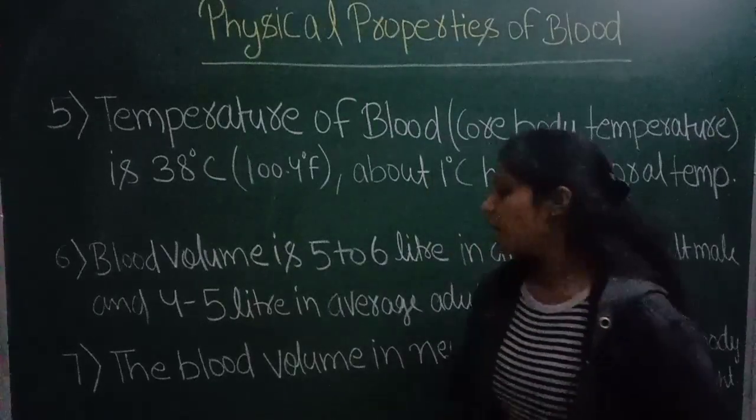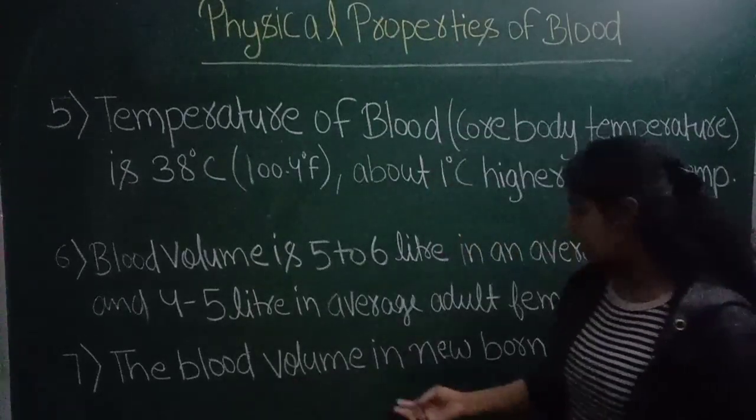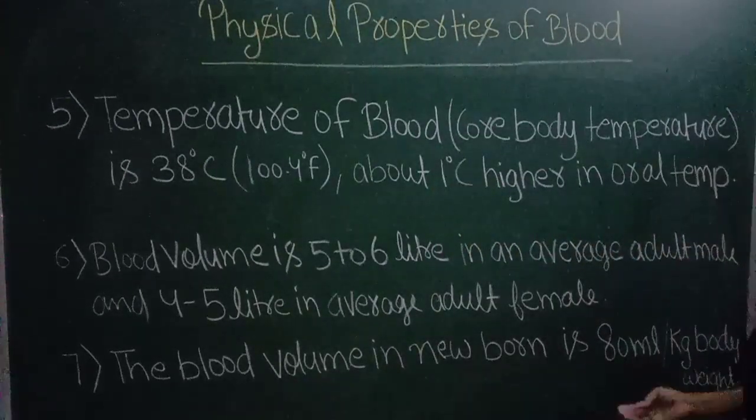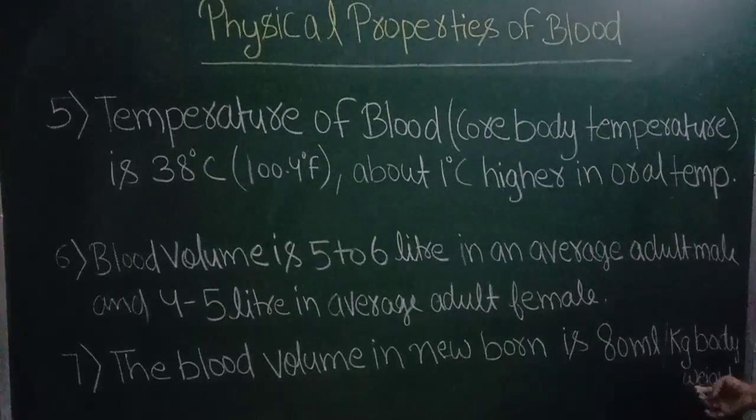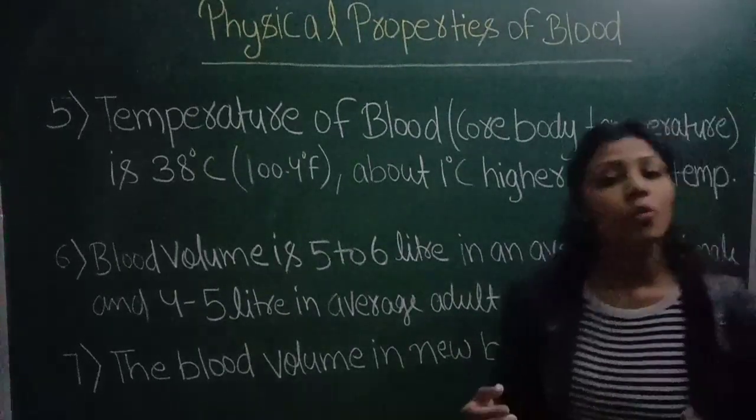The blood volume in newborns is 80 ml per kg body weight.